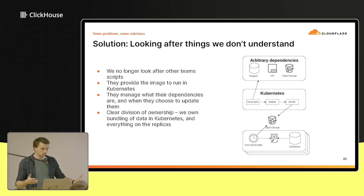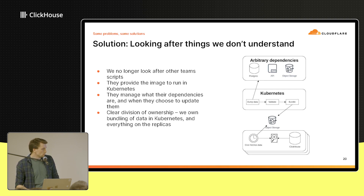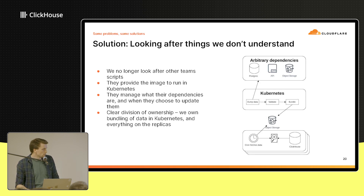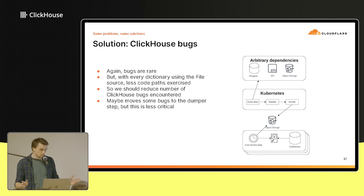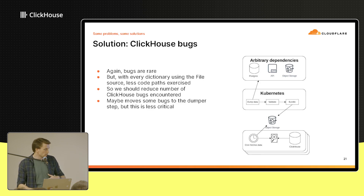The issue of looking after stuff our team didn't fully understand is no longer a problem, because the dumper uses a Docker image that these teams provide to us. Being a Docker image, they get to manage their own dependencies — they can choose what to depend on and when to update. If they make an update that breaks their dependencies, it doesn't really matter because we still have that stale copy of data on disk and they can fix it in their own time. There's a very clear division of ownership: teams own the dumping and validation, and we own the bundling and everything running on the individual machines.